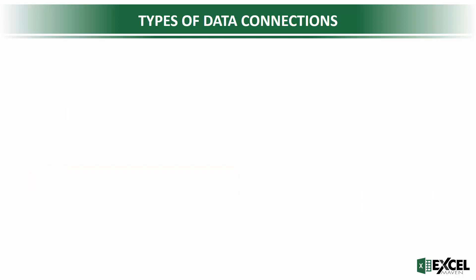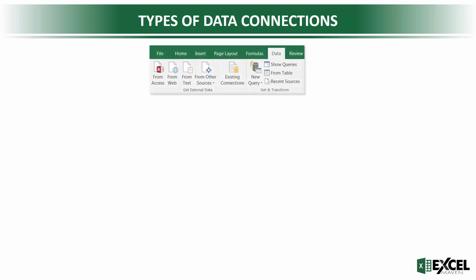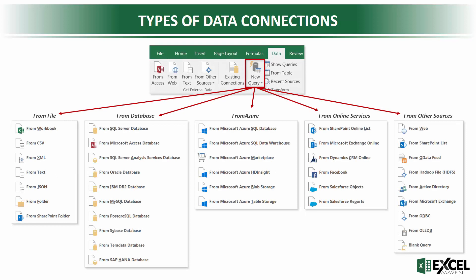Let's take a look at what types of data connections are available. When you click on the New Query button, you'll see all of these different potential submenus. You've got simple ones like from Excel workbooks, flat files like CSV or text. One really cool one is From Folder, which allows you to point to a folder containing multiple files and have Power Query append, stack, and modify those automatically. We'll do a demo of that later in this section.